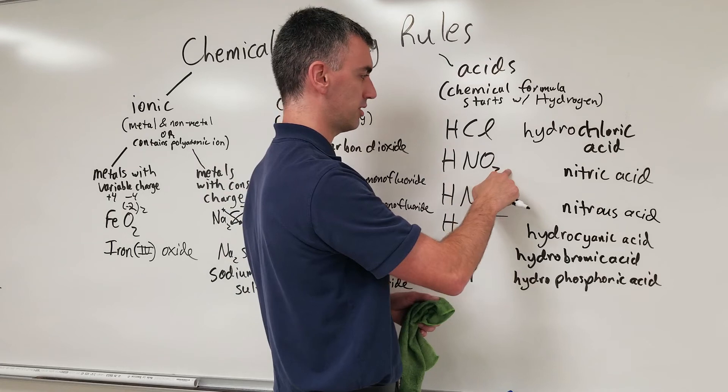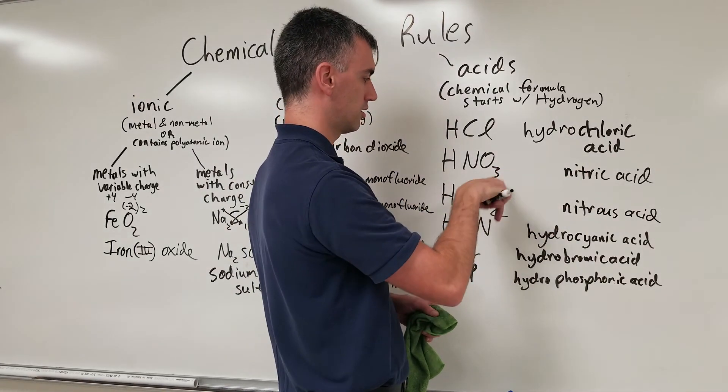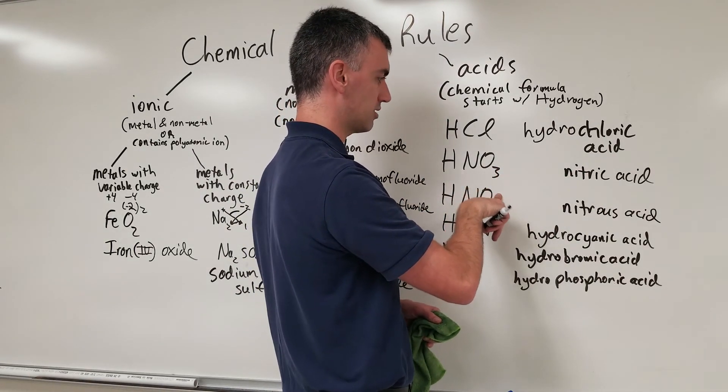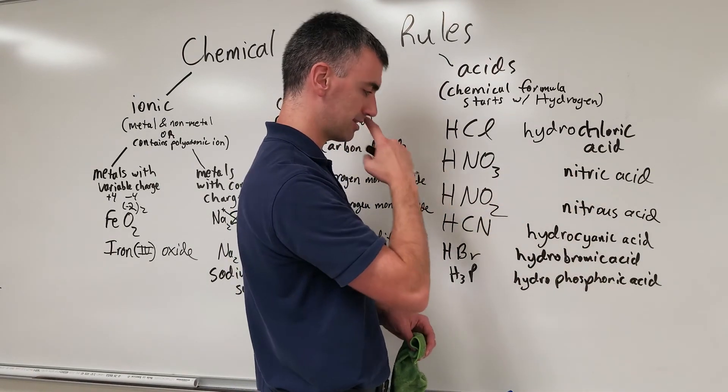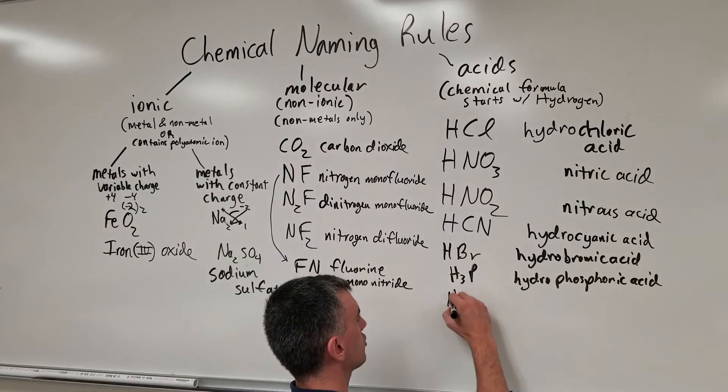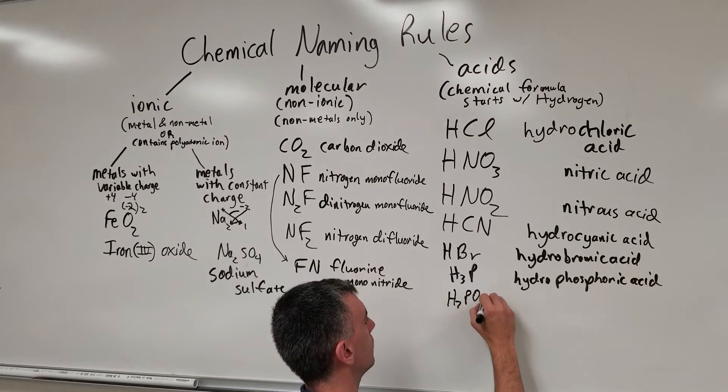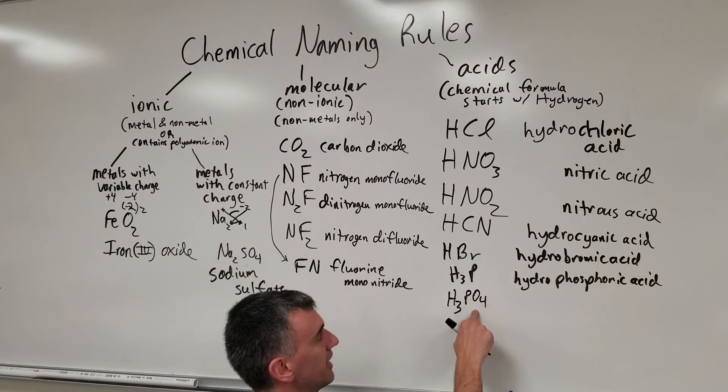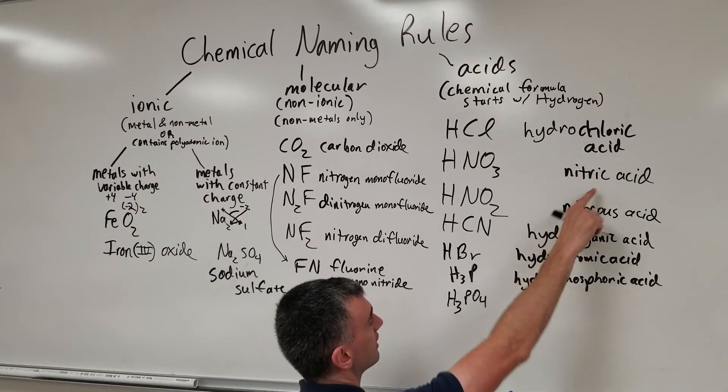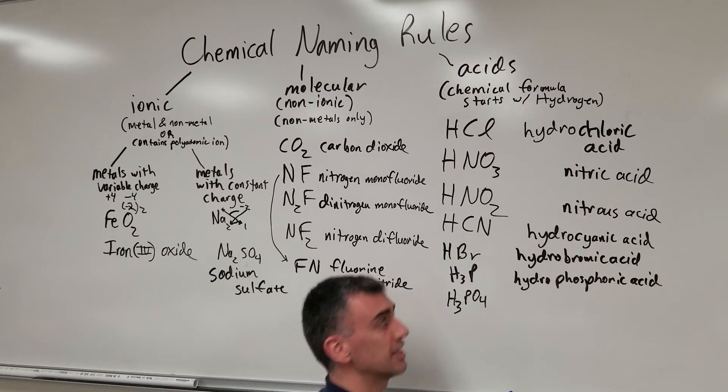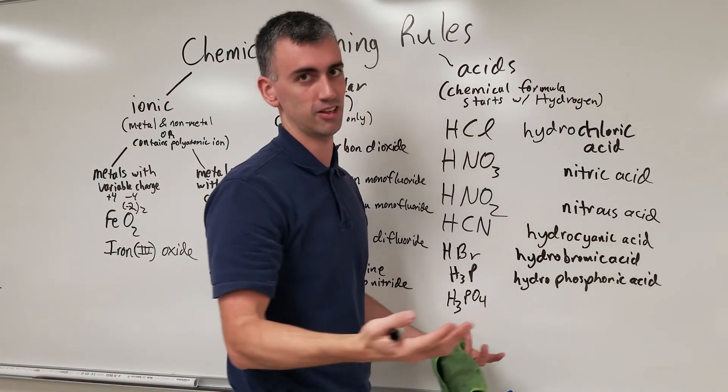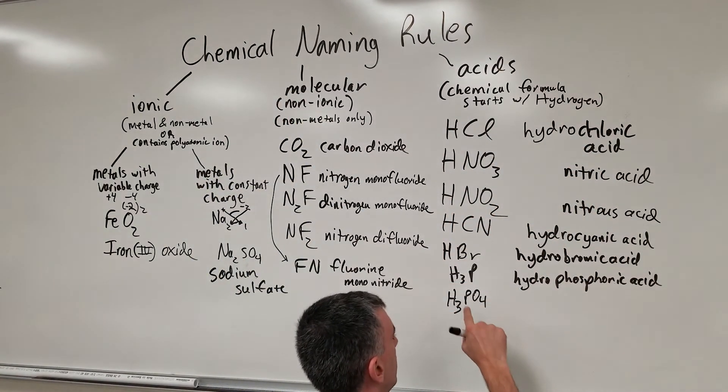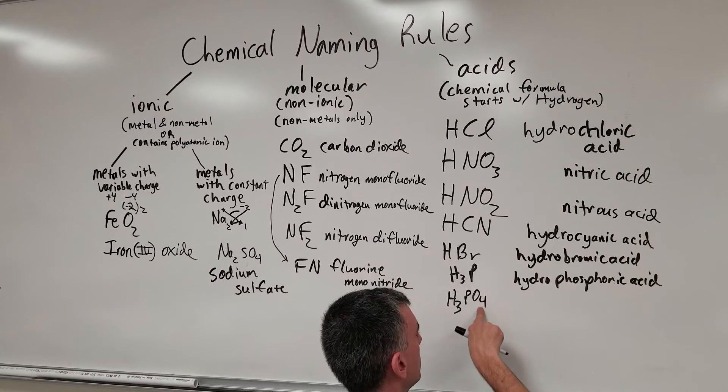-ate becomes -ic. -ite becomes -ous. So nitric acid, nitrous acid. Consider H3PO4. This is phosphate. -ate takes the -ic ending. I've heard it said that if you ate an acid, you would say ick. There you go. Maybe that helps.